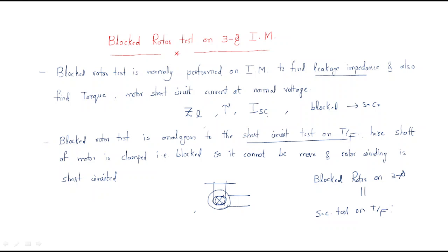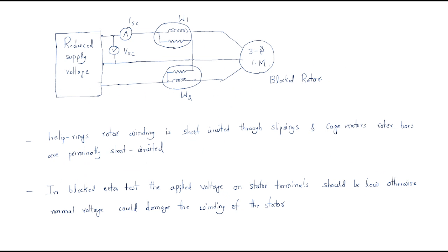In this test, the shaft of the motor is clamped — that is, blocked — so it cannot move. The rotor winding is short circuited. Whenever the rotor doesn't move, the rotor winding also acts as a short circuit. Now observe the block rotor test diagram.